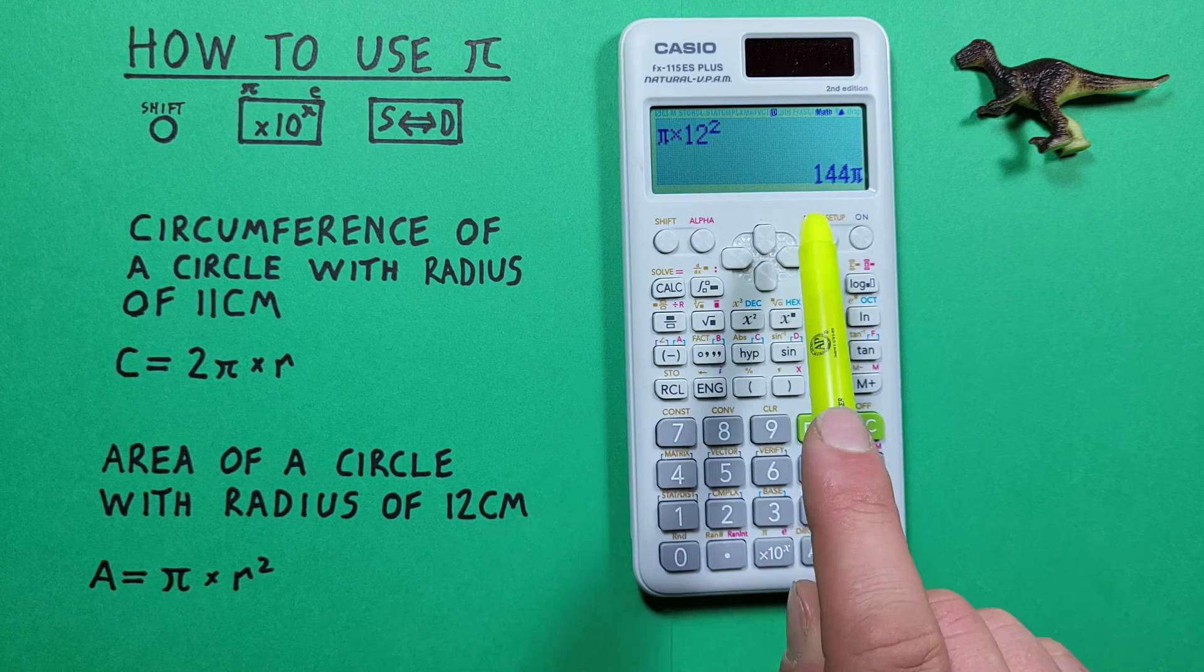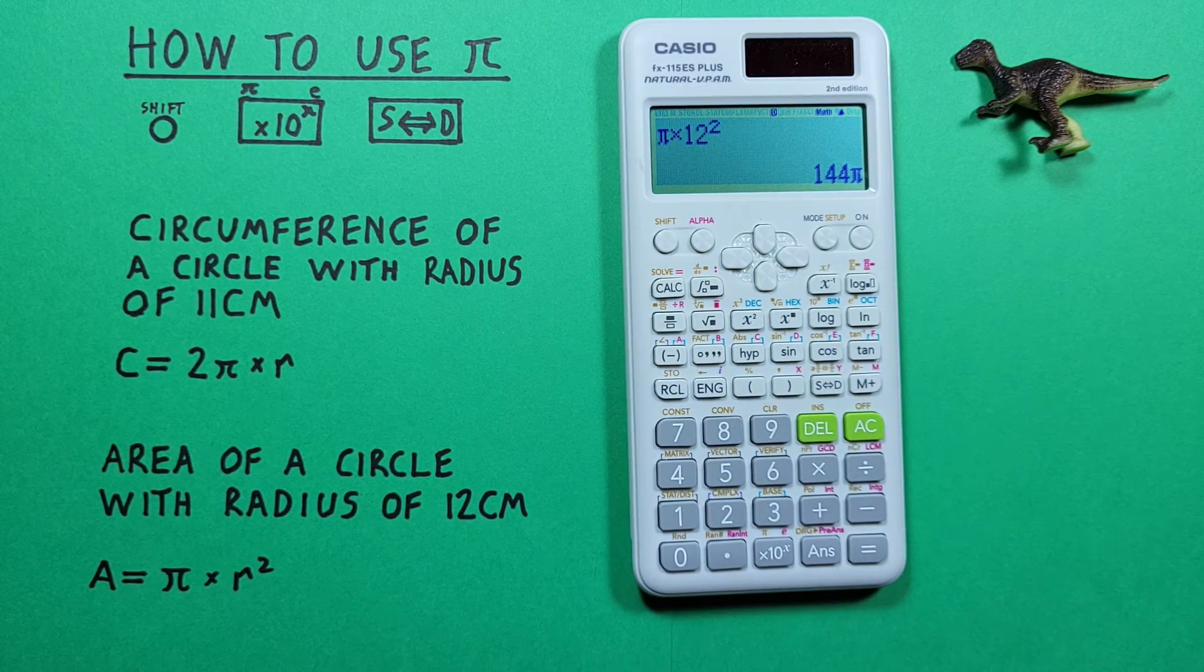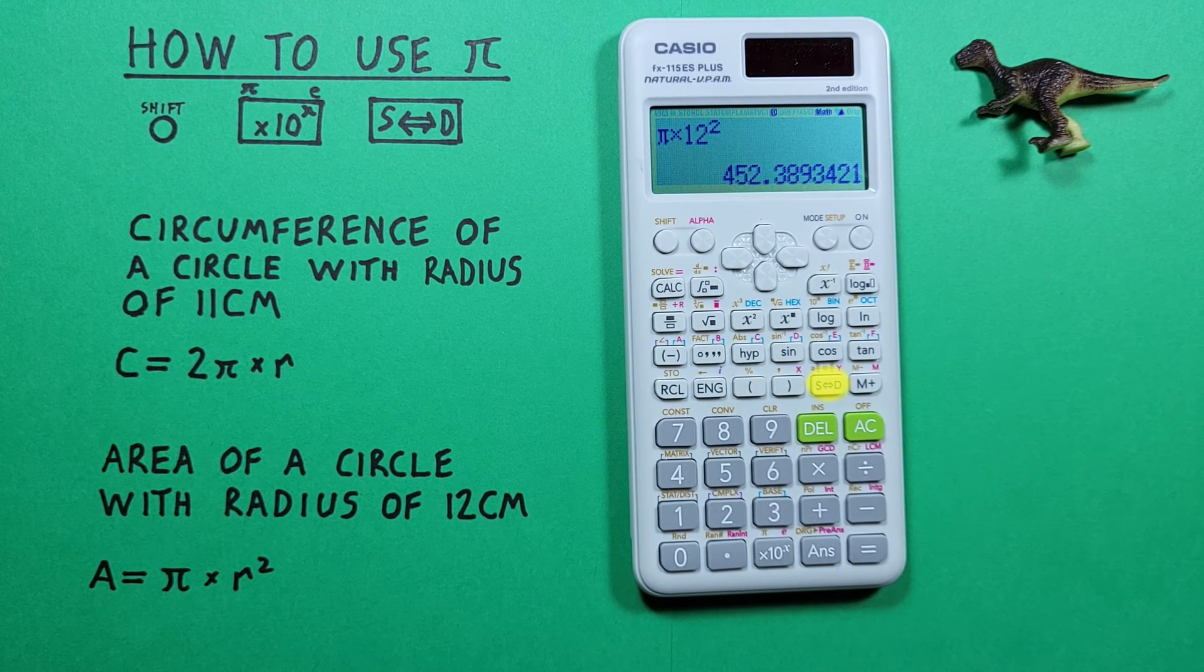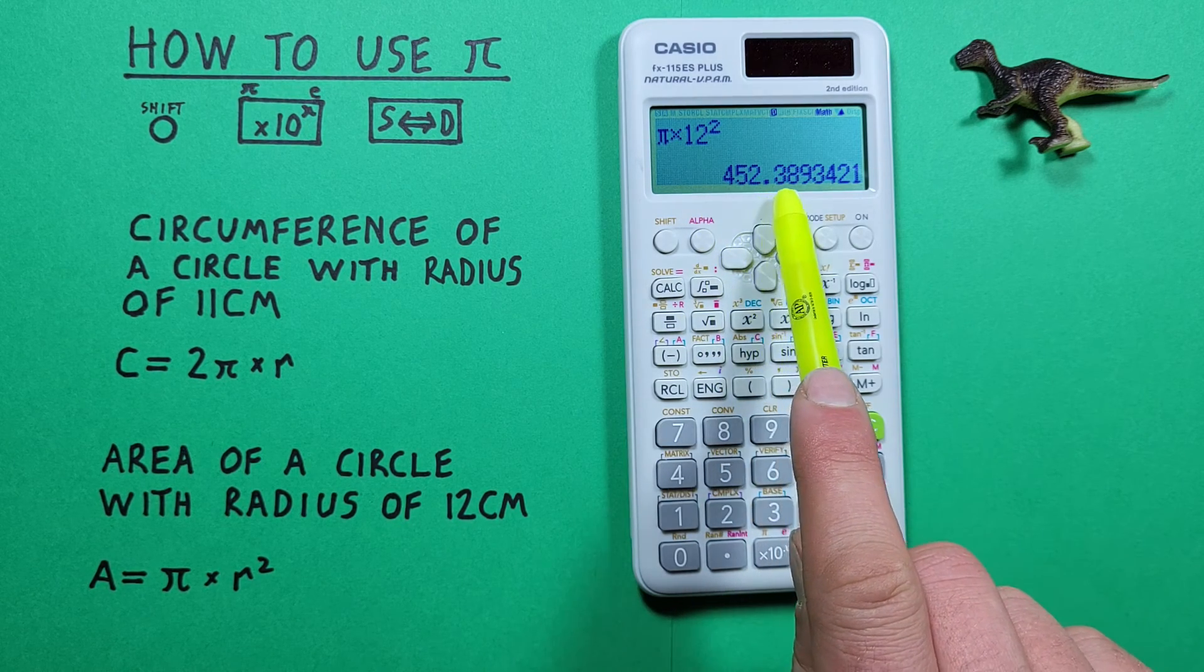And we see we get a result of 144 pi, which if we want that as a decimal we can press the s to d key and get a result of 452.3893 etc.